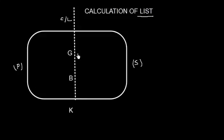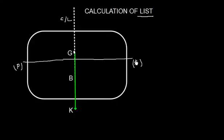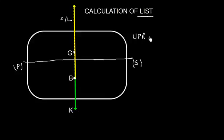Weight will act vertically downward through the center of gravity. And if the vessel is floating at some draft, the geometrical center of this underwater volume is going to be the center of buoyancy, somewhere here, and a force of buoyancy will act vertically upward through that. The vessel is called upright.